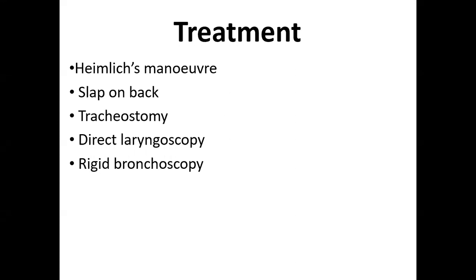The third most important emergency treatment is tracheostomy. If you have about 7 to 10 minutes, in an emergency you can perform a tracheostomy — make a hole in the trachea and put the tracheostomy tube inside — so that the respiratory obstruction is relieved. So the three emergency procedures are: Heimlich manoeuvre in adults, slap on back in children, and tracheostomy to relieve the obstruction.